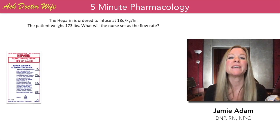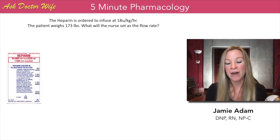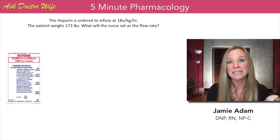Let's begin with heparin. Heparin is ordered to infuse at 18 units per kilogram per hour. The patient weighs 173 pounds. What will the nurse set as the flow rate? So in this case, the first thing we need to do is convert the patient's weight to kilograms. This is going to be an important number that we'll need through the rest of the problem.